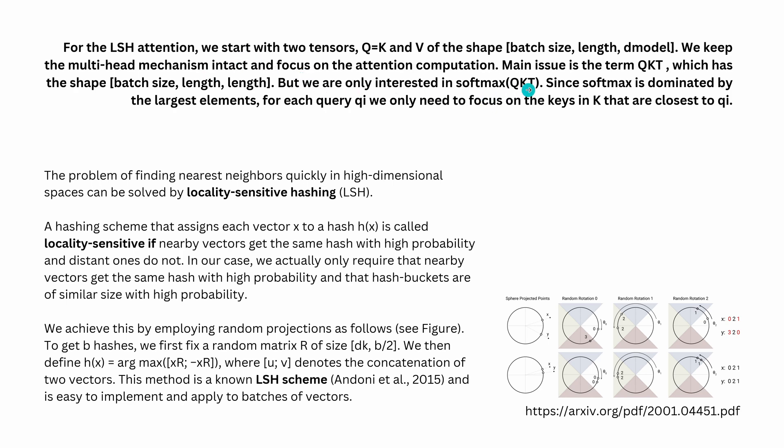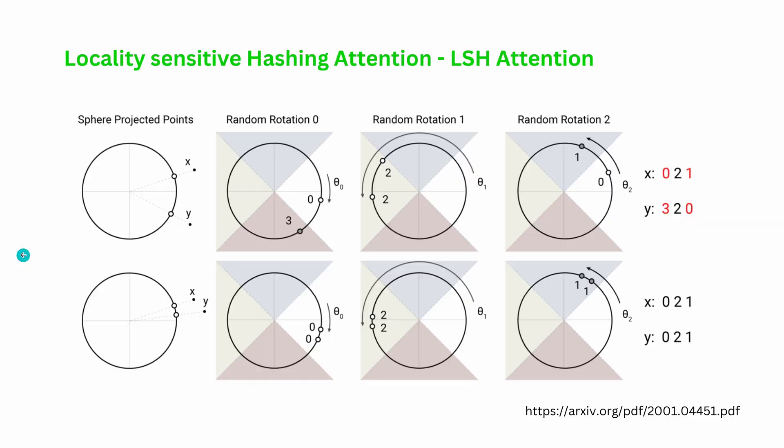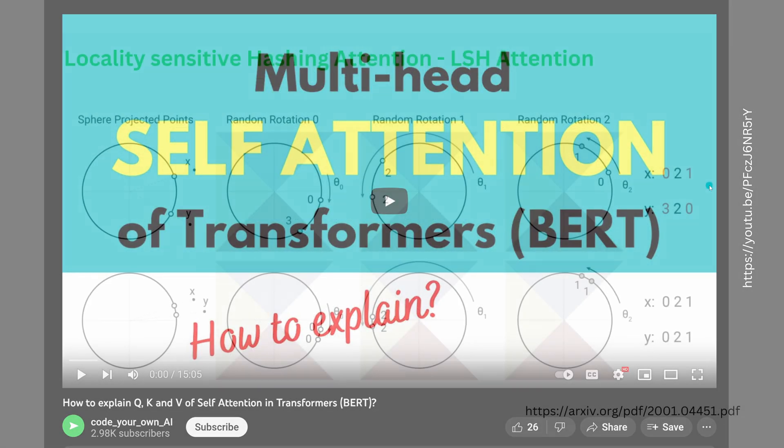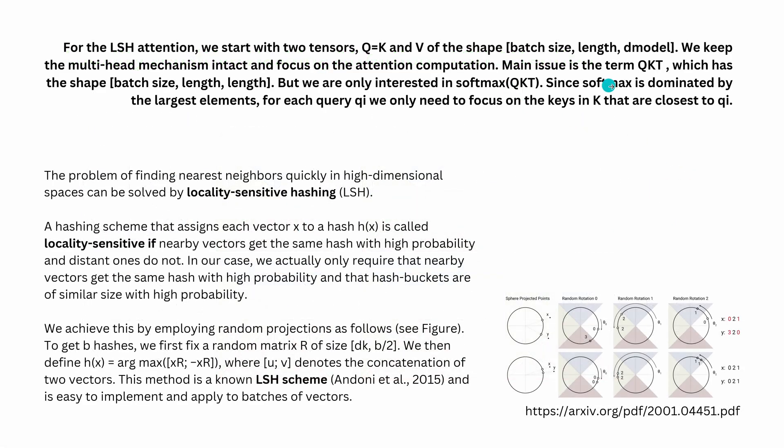But we are only interested in the softmax. And you know why? There's the softmax. No, you know it. Here: attention is softmax of—my goodness, we are clever today. So we're interested in the softmax. And since the softmax is dominated by the largest element, for each query qi, we only need to focus on the keys in K that are closest to qi. So now, how do you find these elements? Easy. The problem of finding nearest neighbors quickly in a high-dimensional space can be solved by locality-sensitive hashing. Now, what a coincidence!